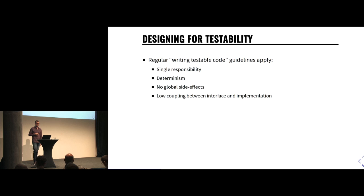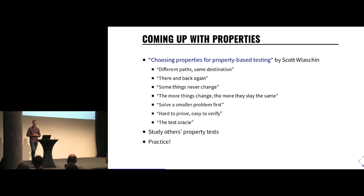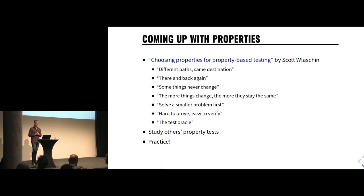You're still thinking it's hard to come up with properties — and it is. It's very hard to rewire your mind from example-based to property-based and find the general behavior of your system. I recommend checking out the article 'Choosing Properties for Property-Based Testing' by Scott Wlaschin. He lists a bunch of general patterns for how properties can look. I'd encourage you to go through these and take problems in your code and try to apply them.